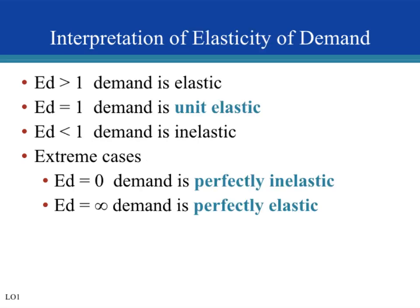Let's work on interpreting elasticity of demand. In our last example, elasticity of demand was less than 1 — it was 0.41. So for every 1% change in price, quantity demanded changes by 0.41%. Anytime elasticity of demand is less than 1, quantity demanded changes less than the change in price. If price went down by 5%, then quantity demanded will go up by less than 5%. This means the good is not very responsive to a change in price.